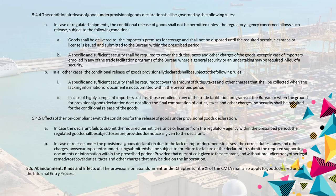5.4.5 Effects of Noncompliance with the Conditions for the Release of Goods under Provisional Goods Declaration. a. In case the declarant fails to submit the required permit, clearance or license from the regulatory agency within the prescribed period, the regulated goods shall be subject to seizure, provided due notice is given to the declarant. b. In case of release under the Provisional Goods Declaration due to the lack of import documents to assess the correct duties, taxes, and other charges, any security posted or undertaking submitted shall be subject to forfeiture for failure of the declarant to submit the required supporting documents or information within the prescribed period, provided that due notice is given to the declarant, and without prejudice to any other legal remedy to recover duties, taxes, and other charges that may be due on the importation.